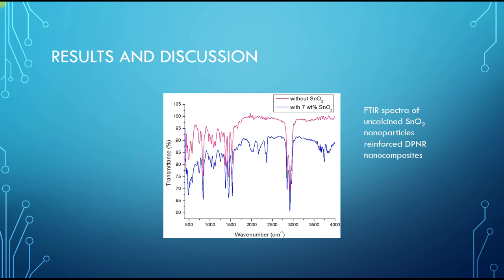For FTIR results, it shows that uncalcined tin dioxide nanoparticles altered the molecular makeup of the DPNR matrix. Tin-oxygen, tin, and tin hydroxide stretching modes were assigned to the 550 to 650 wavenumber bands.